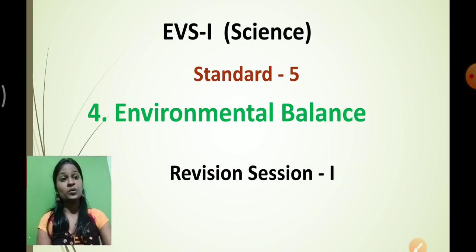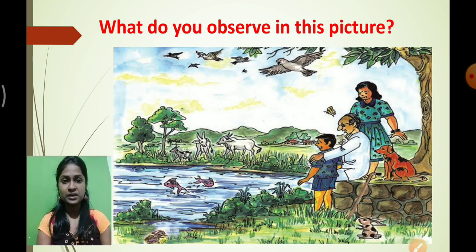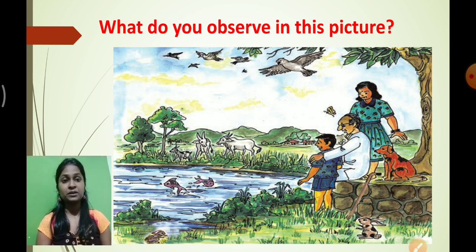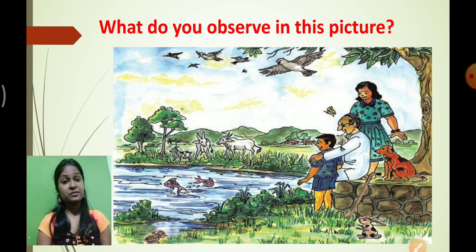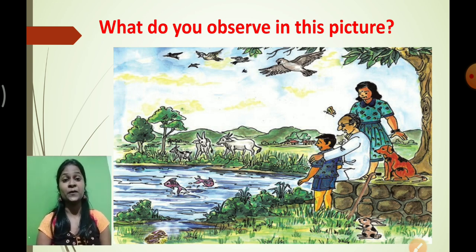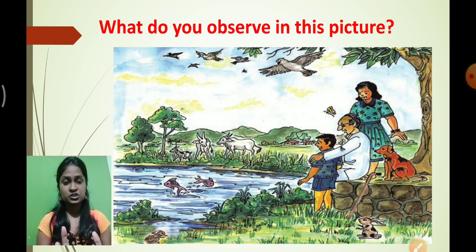Let's have a look at the picture. What can you see here? You can see a natural scenario. In this picture you can see many things — a river, sunlight, sky, cattle grazing the grass, a rabbit, a dog, birds flying in the sky, and two kids who are watching the scenario with their grandfather.